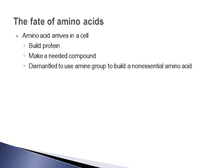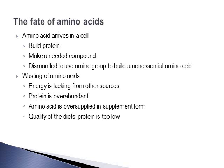Once amino acids arrive at the cell, there are basically three fates: they can be used to build protein, used to make a needed compound such as the vitamin niacin, or dismantled to use the amine group to build a non-essential amino acid. When there is over-consumption of amino acids, there's no benefit — amino acids consumed in excess are wasted.